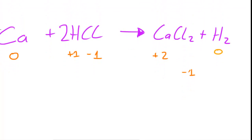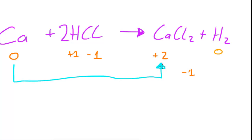Now looking at the change in oxidation numbers: calcium has changed from zero to plus two. That means its oxidation number has increased by two, and therefore calcium has been oxidized because its oxidation number has increased.